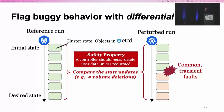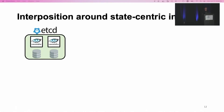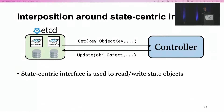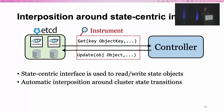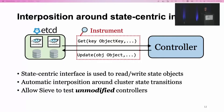An important liveness property is that a controller should eventually achieve the desired state. This can be checked by comparing the end states of the two runs, which tells you whether the controller in the perturbation run achieves the same final state as in the reference run. A safety property example is that a controller should never delete user data unless requested — this can be checked by comparing state updates, since any inconsistency in the number of volume deletions between the two runs will be captured. To implement the idea, we interpose around the cluster state transitions using the state-centric interface in modern cluster management systems, which also allows testing unmodified controllers.